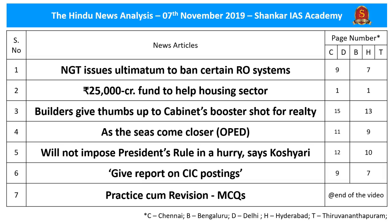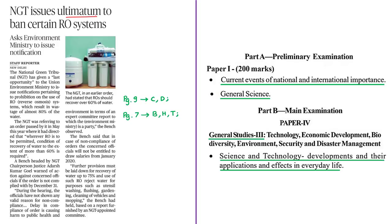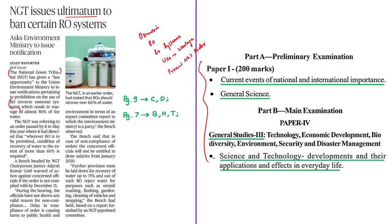Let us now start our analysis. This news article is about an ultimatum given by the National Green Tribunal to ban certain types of reverse osmosis systems. With reference to this news article we'll be focusing on the process of osmosis, then the process of reverse osmosis, then about the reverse osmosis system and how its use leads to wastage of water, and also the present order issued by the National Green Tribunal. The relevant syllabus is given here for your reference.